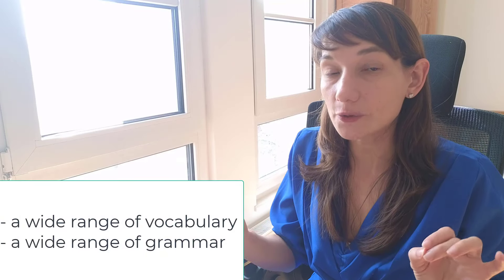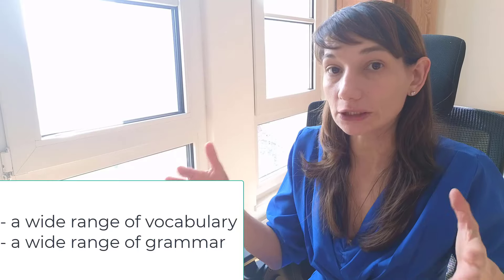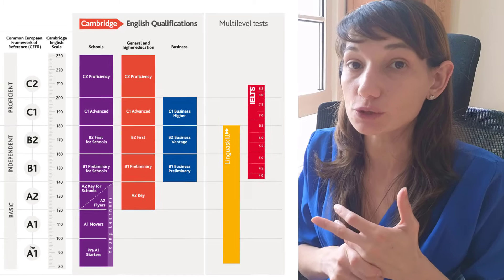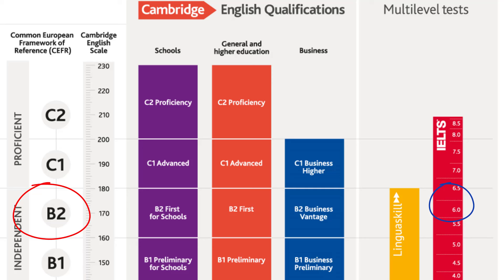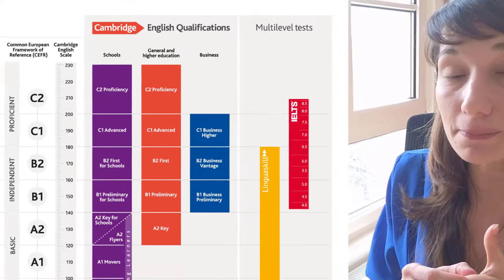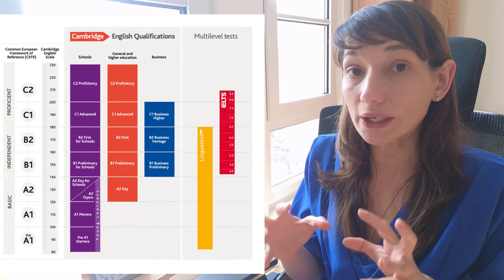Let's get the ball rolling. First of all, to score high on IELTS, you need to understand what the examiners are looking for. Most probably you already know that it's a wide range of vocabulary and wide range of grammar, which corresponds to a particular level. B2 or upper-intermediate corresponds to Band 6, advanced corresponds to Band 7, proficiency to Band 8, and proficiency plus to Band 9. But vocabulary and grammar are not the only aspects which are evaluated.